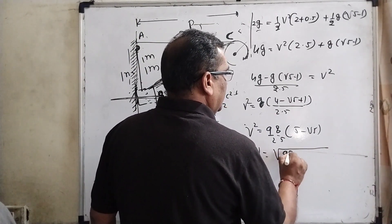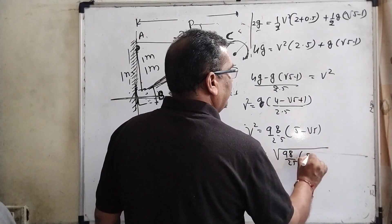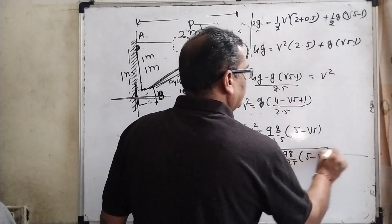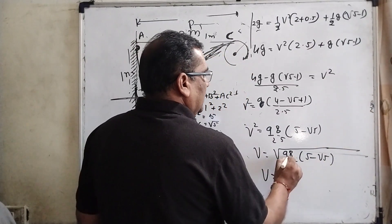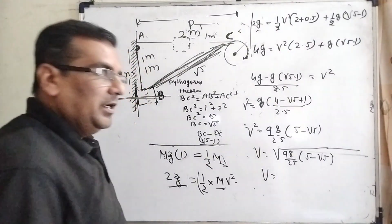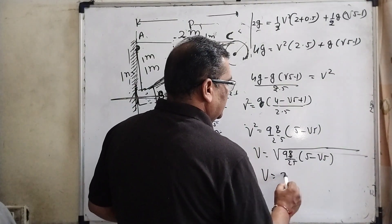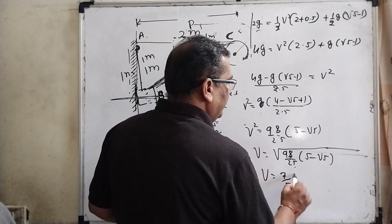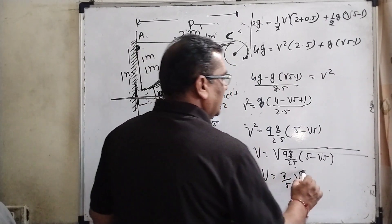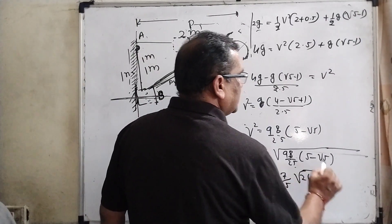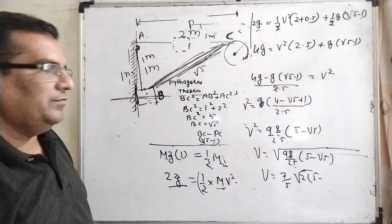Root 9.5 minus root 5. Here 98 can be written as 2 into 49, and 49 root is 7, so 5 and here is 2 remaining, and 5 minus the value of root 5 is 2.23.